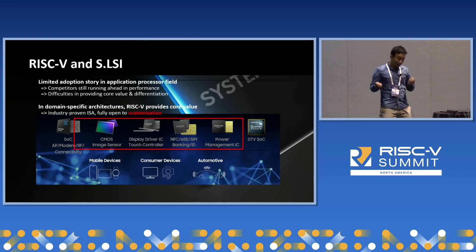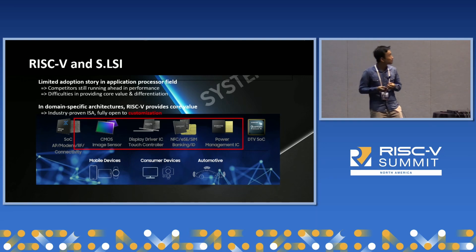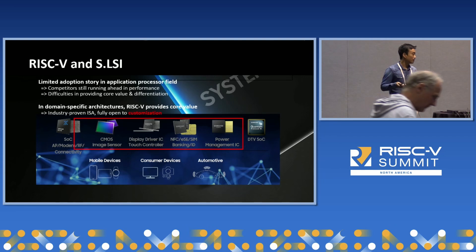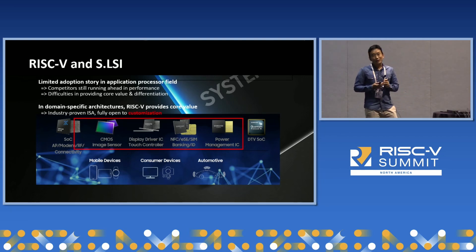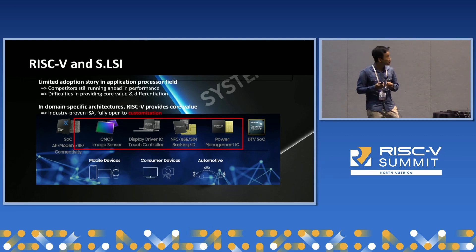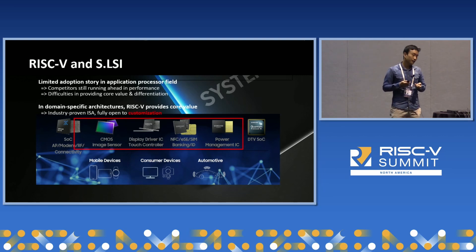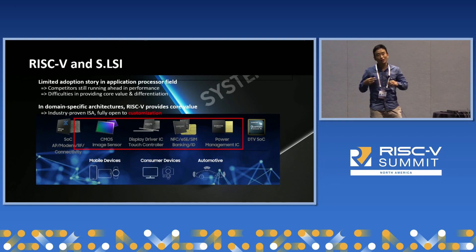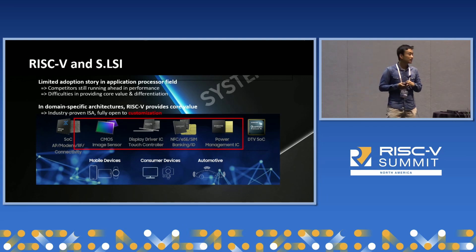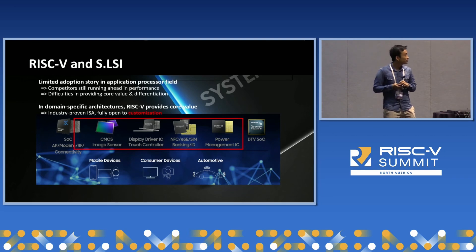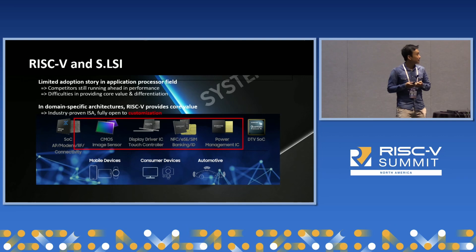Even if RISC-V does eventually catch up in single-core performance, it is difficult to share the core values or differentiations between conventional cores. On the other hand, when we go to the domain-specific architecture, RISC-V is really showing a great amount of success stories in many different fields. That is due to RISC-V being the only industry-proven ISA that allows users to fully customize it based on their requirements. System OSI has also announced several times that we adopted RISC-V in a lot of embedded cores in our products. Today I'm going to share one of the successful adaptations of RISC-V in RF, based on the customization capability.